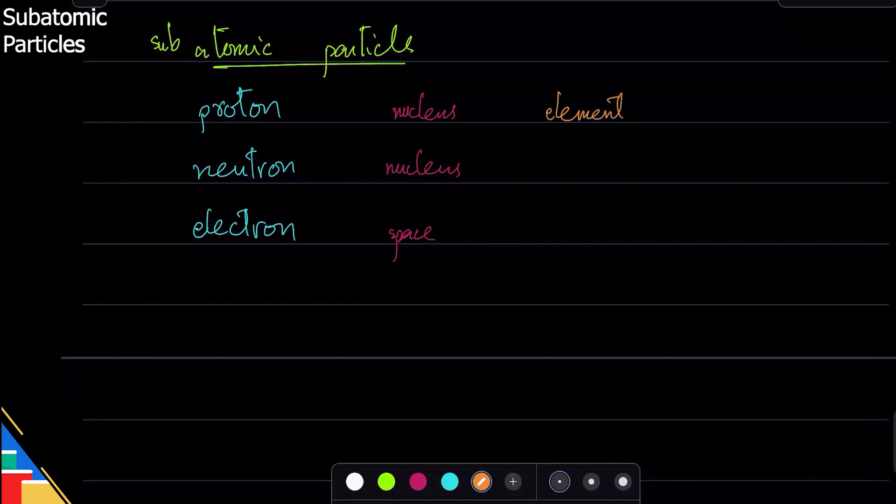it will become helium. It will not be hydrogen. That is telling us that the identity of the element depends on proton. You change the number of protons, you change the element.